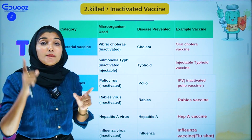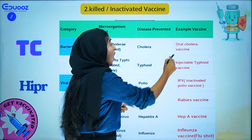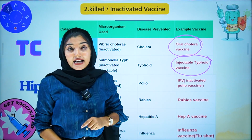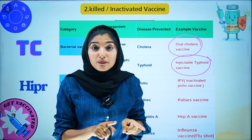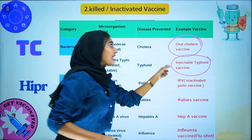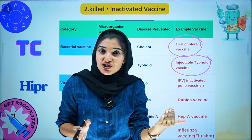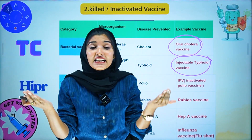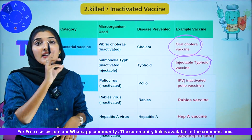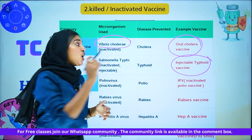Now for killed or inactivated vaccines. We will learn the oral cholera vaccine and the injectable typhoid vaccine. The oral typhoid vaccine is live attenuated, while the injectable typhoid vaccine is killed or inactivated. For the oral cholera vaccine, the bacteria is Vibrio cholerae, and the disease is cholera.